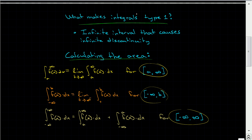As a quick example, if we have the function f of x equals 1 over x squared, going from 1 to infinity of 1 over x squared dx. The antiderivative of 1 over x squared is negative 1 over x.